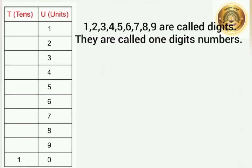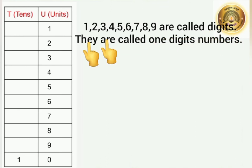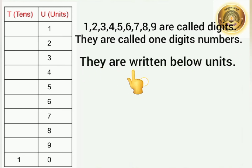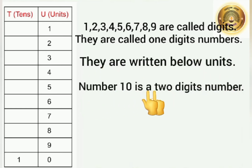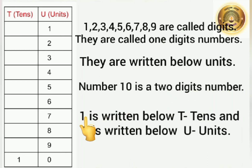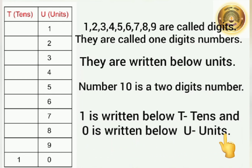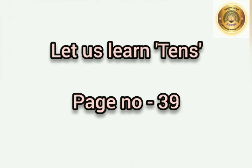Students, as we know, 1, 2, 3, 4, 5, 6, 7, 8, 9 are called digits — they are called one-digit numbers. They are written below units. Number 10 is a two-digit number. 1 is written below T, that is tens, and 0 is written below U, that is units. According to this, today we are going to learn 'Let Us Learn Tens,' page number 39.